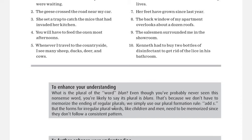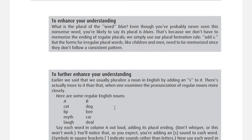Now it's about pronunciation. Take the nonsense word 'blunt' — if I ask what's the plural, you'd say 'blunts', adding 's'. Native speakers don't have this problem because they're used to pronouncing these words correctly, but non-native speakers may face some difficulty. Listen carefully: 'cat' — 'cats'. Pay attention to the end — is there an 's' type sound or a 'z' type sound? For 'cat/cats', 'lip/lips', 'myth/myths', 'love/loves' — listen to the other column: 'dog/dogs', 'bee/bees', 'car/cars', 'deal/deals'. In 'dog', 'bee', 'car', and 'deal', there is a 'z' sound.